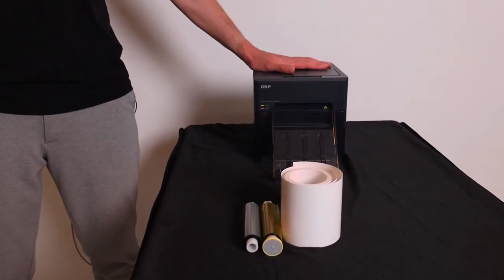Now let's see how to place media in the QW410. The ribbon and the paper. We begin with the ribbon. The ribbon is located here. We position it at the top in the printer.